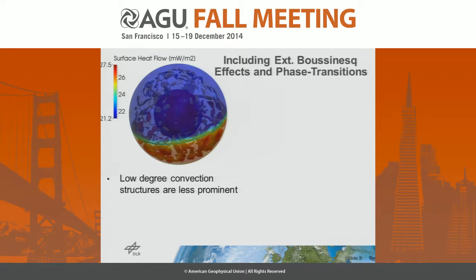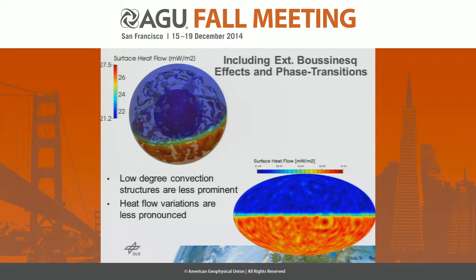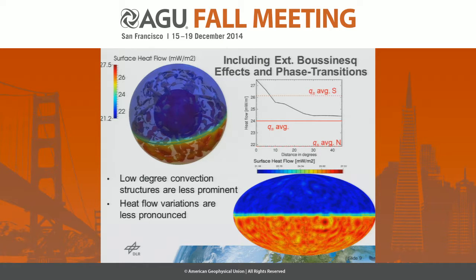We can also vary the parameters to include the anelastic approximation and phase transitions — basically adiabatic heating and phase transitions. We then see that the low-degree convection pattern structures are less prominent, and in the heat flow map we see smaller variations over the surface. The dichotomy is still clearly visible, but within the two hemispheres we don't observe large variations. Averaging across the Elysium region contour, we are pretty close to the entire surface average.